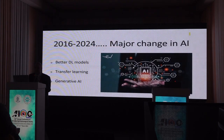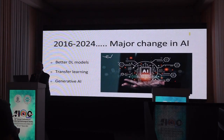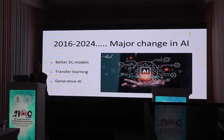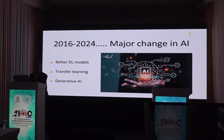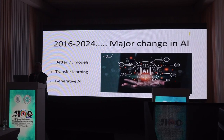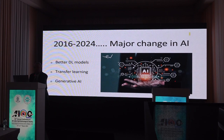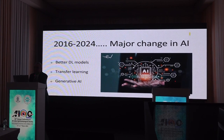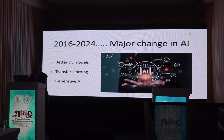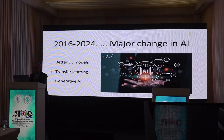Between 2016 and 2024, there have been major changes in AI. We have better deep learning models. We have technology called transfer learning, making sure that we really don't need lakhs of images to train an algorithm — even with a smaller number of images, an algorithm can be trained. And more recently, we have generative AI coming up, which has really transformed the way AI looks today.